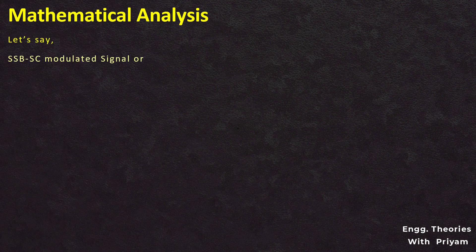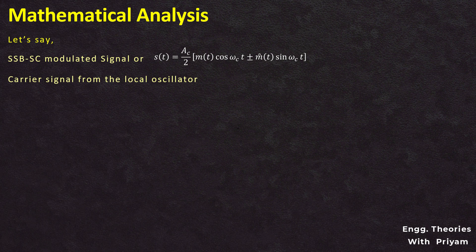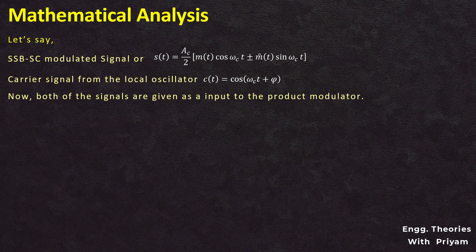Let the SSB-SC modulated signal S(T) be equal to (AC/2) · m(T) · cos(ωC·T) ± m̂(T) · sin(ωC·T), where m(T) and m̂(T) are the message signal and its Hilbert transform respectively. The carrier signal with phase shift φ is C(T) = cos(ωC·T + φ). The output of the product modulator, Y(T), is the multiplication of these two signals: Y(T) = S(T) · C(T).